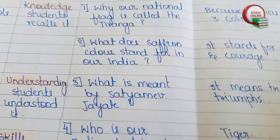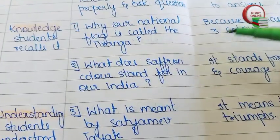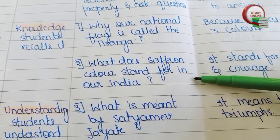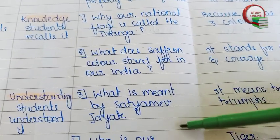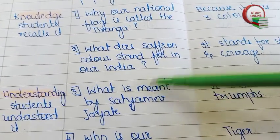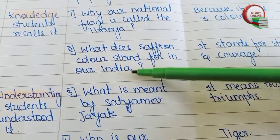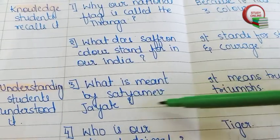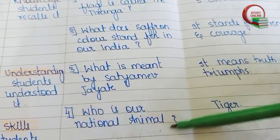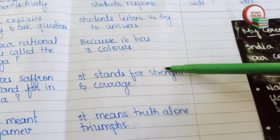The questions for Presentation One are: Why is our national flag called the Tiranga? What does the saffron color stand for in our national flag? What is meant by 'Satyamev Jayate'? Who is our national animal? Here you can see the expected answers from students.